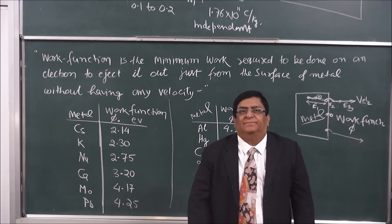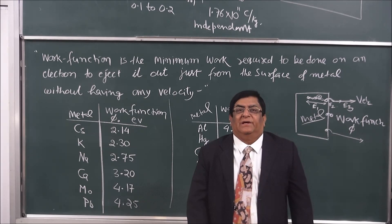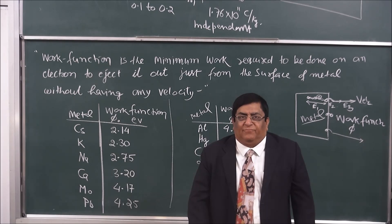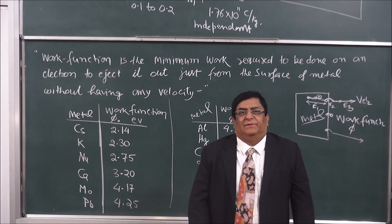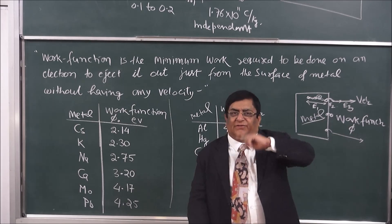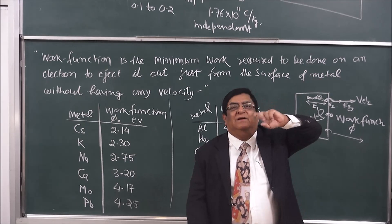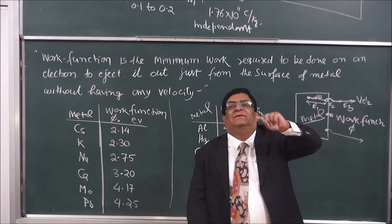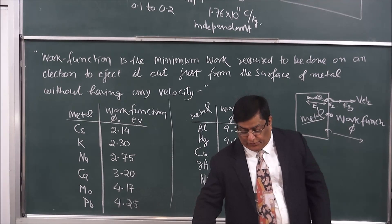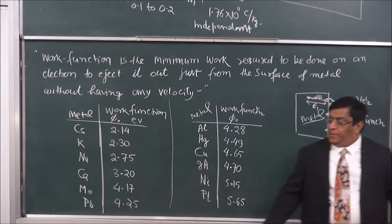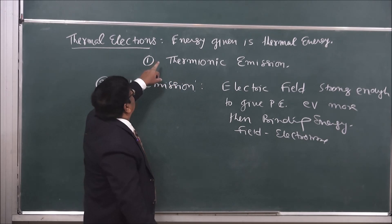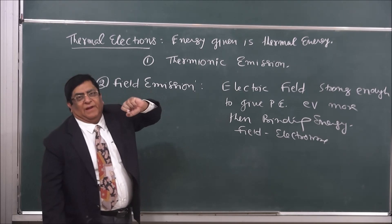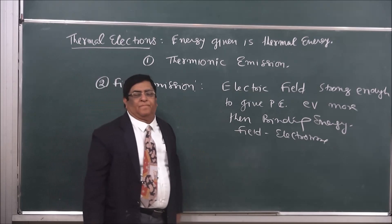The same is true for nickel, gallium, etc. So this is work function. Now, how can we give energy to an electron so that it comes out? Ejection of an electron can be done by three methods. The first method is giving thermal energy — heat. When we give thermal energy, there is lot of agitation, velocity increases, it becomes more than the escape velocity, and the electron comes out. This is known as thermionic emission, and these electrons are called thermal electrons.